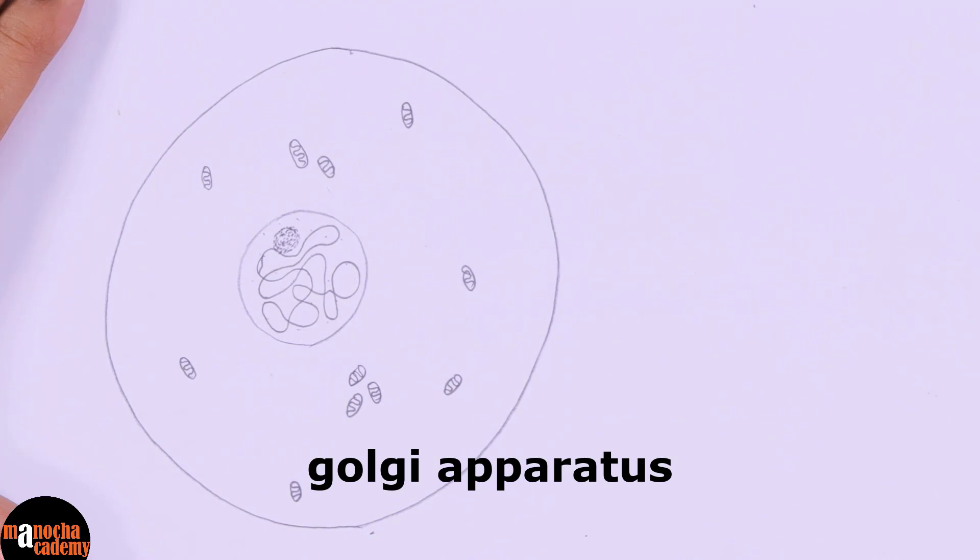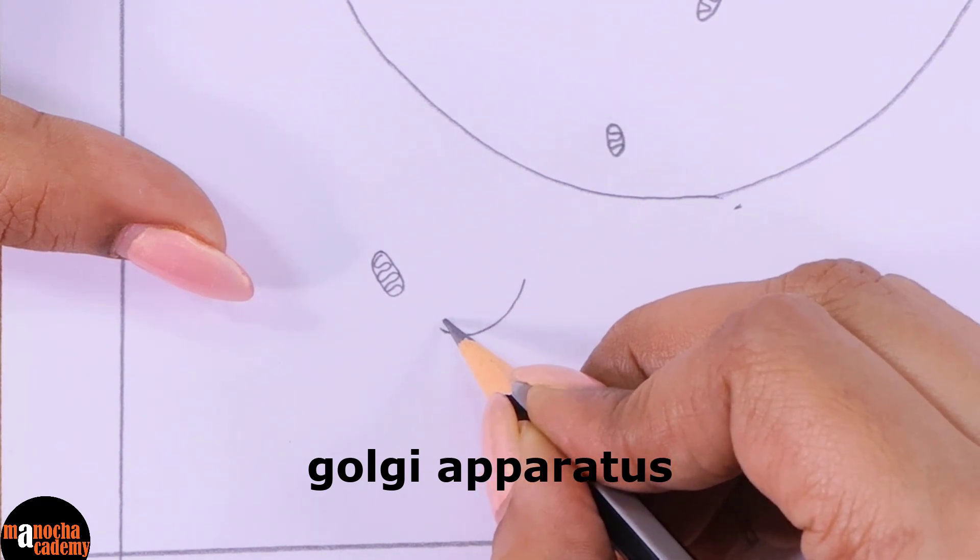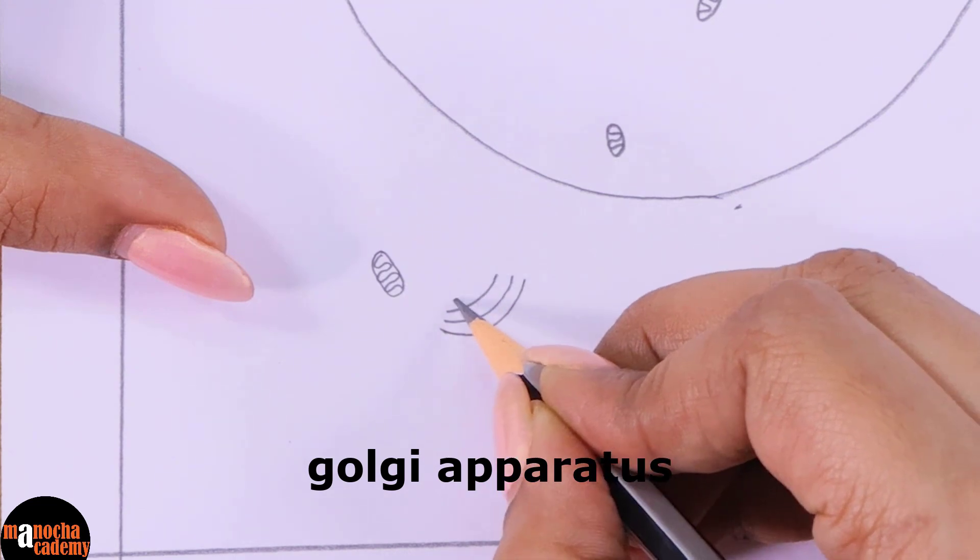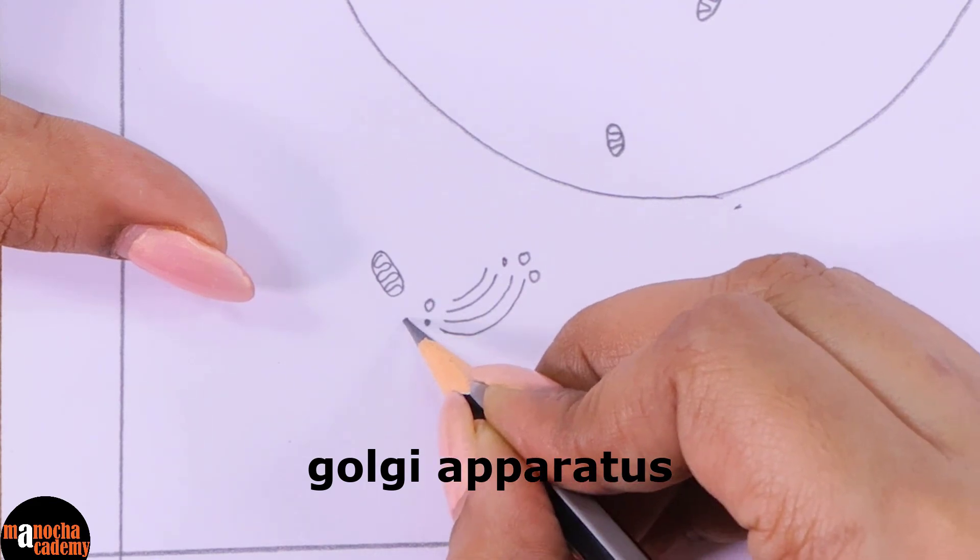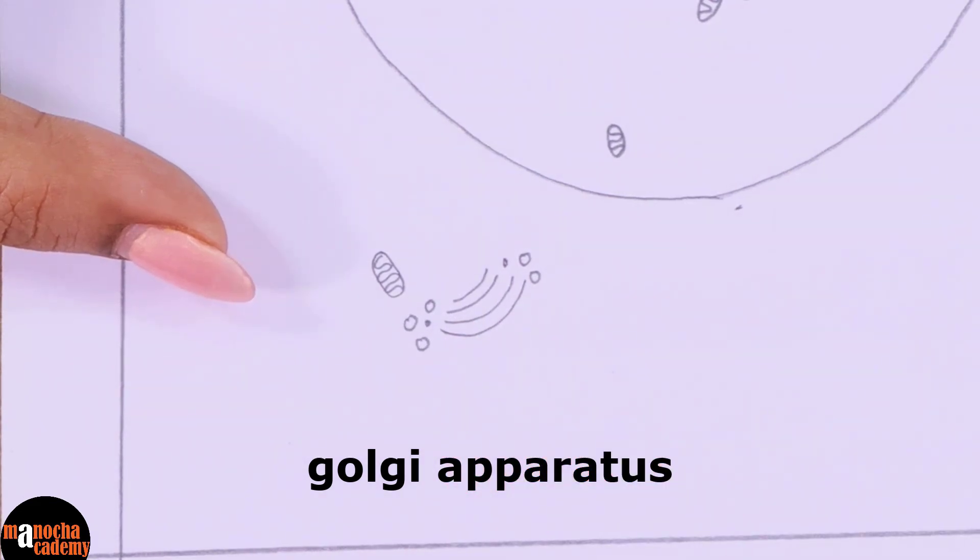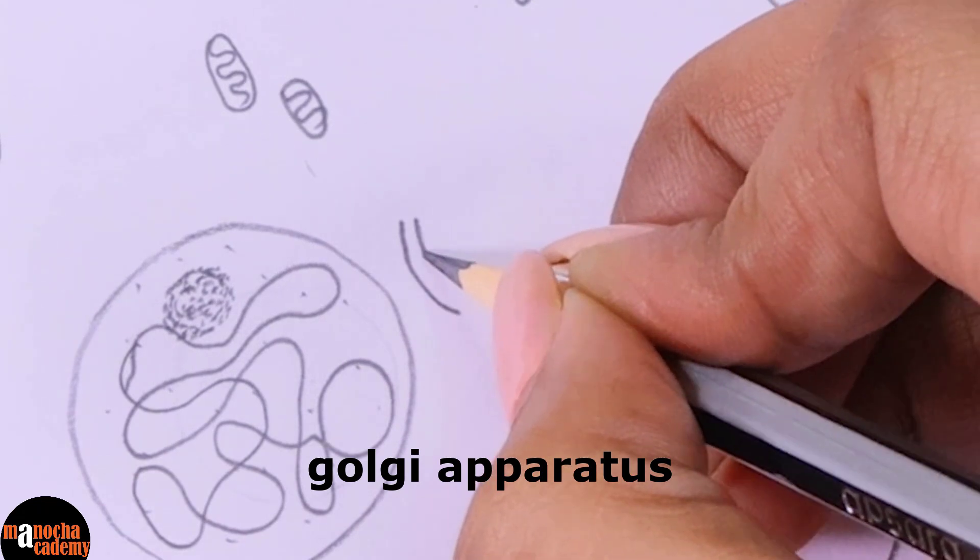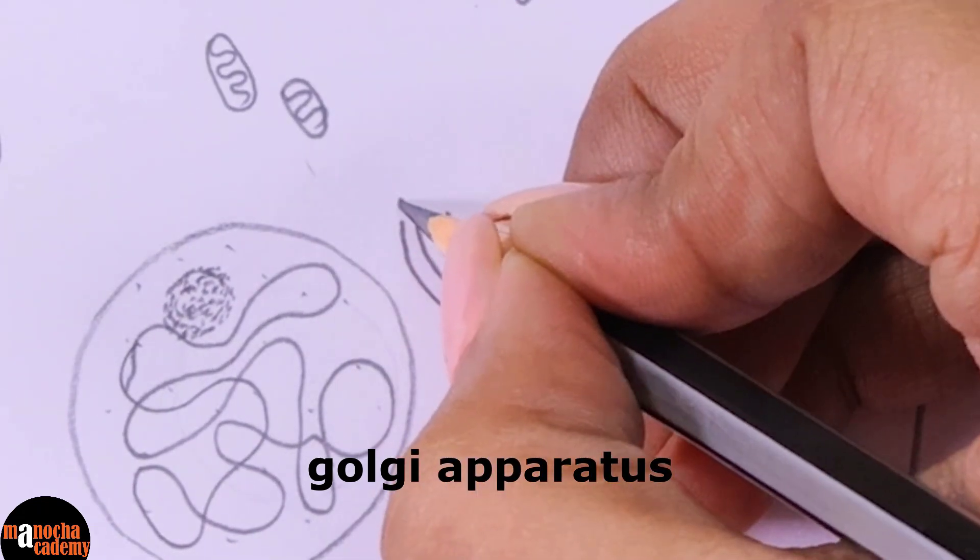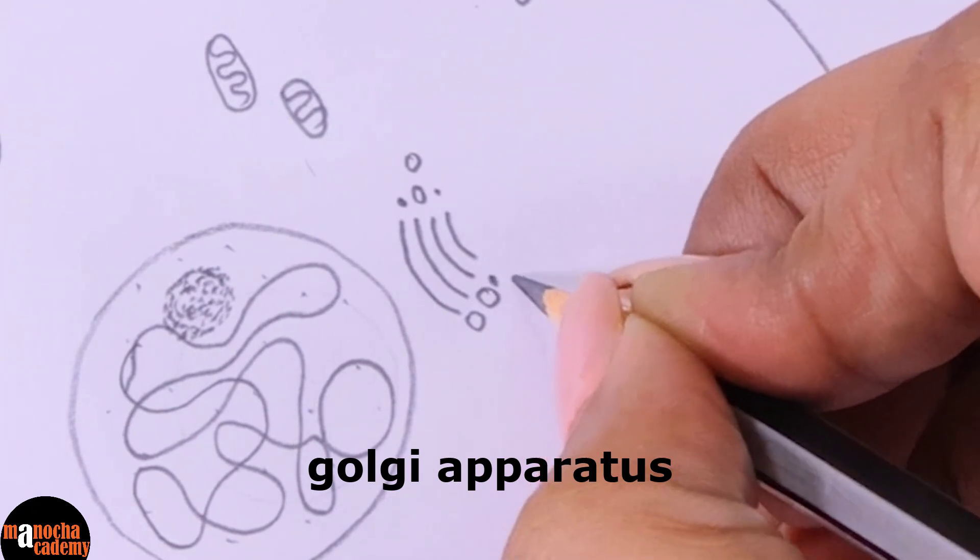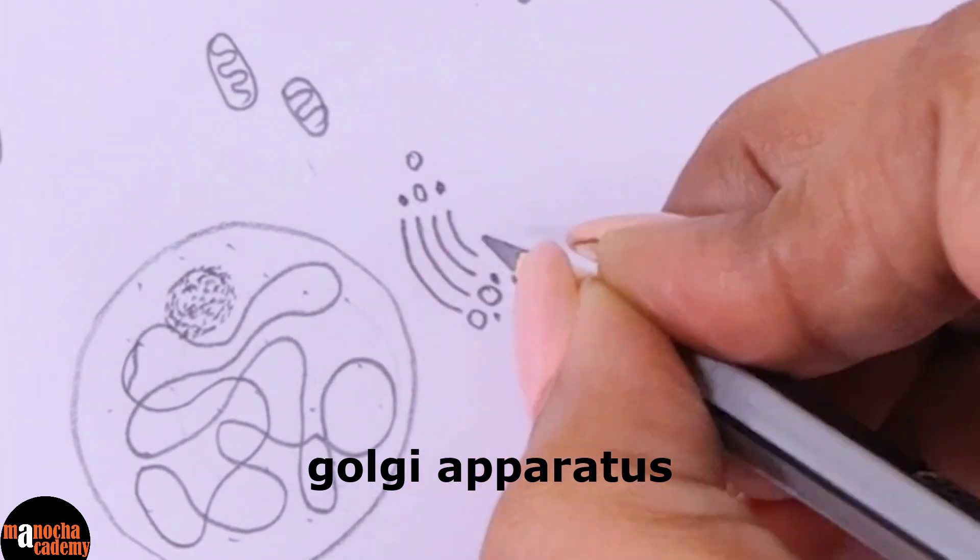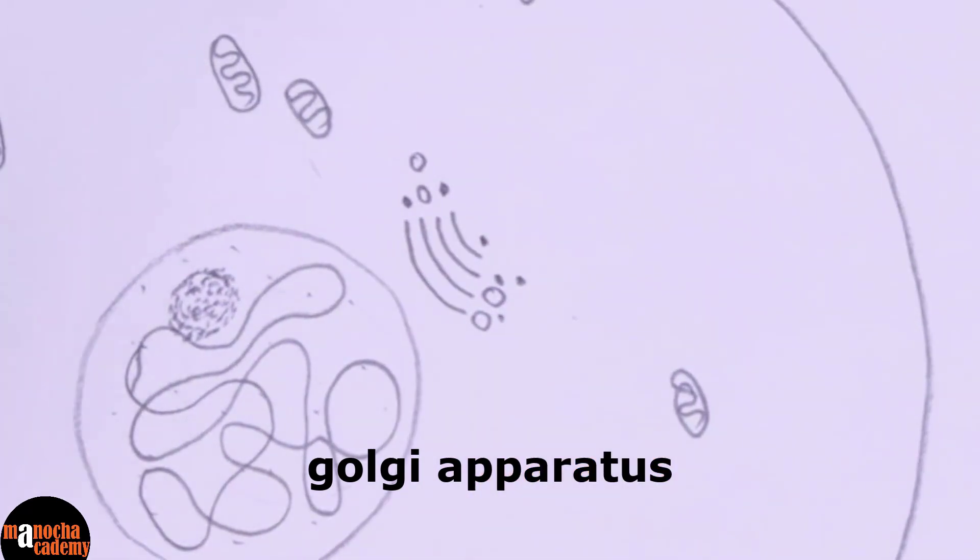Then we will draw the Golgi apparatus. Now for drawing the Golgi apparatus, how do we draw it? We usually draw the Golgi apparatus like this. We draw a few parallel lines, curved parallel lines, and then we draw some dots and some circles surrounding it. That is how we draw the Golgi apparatus. This entire structure should be present near the nucleus. So I will be drawing the Golgi apparatus here. See the convex side should face the nucleus and the concave side should face the cell membrane and there should be few dots and very small circular vacuolish structures present surrounding it. So that is the Golgi apparatus.